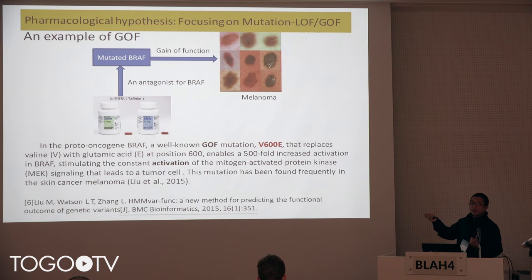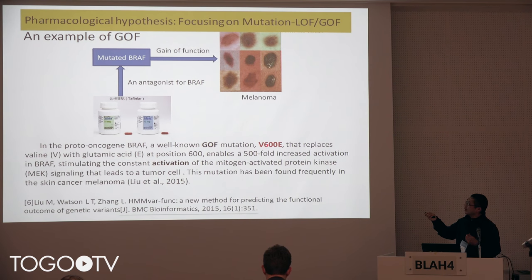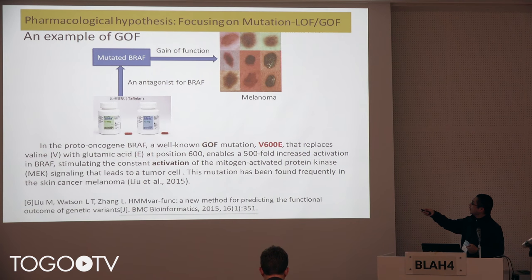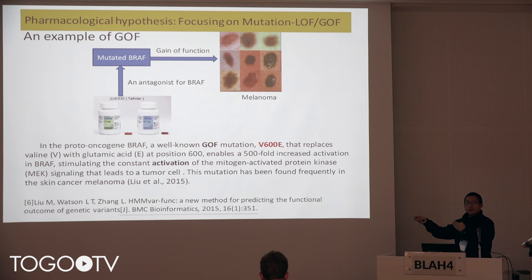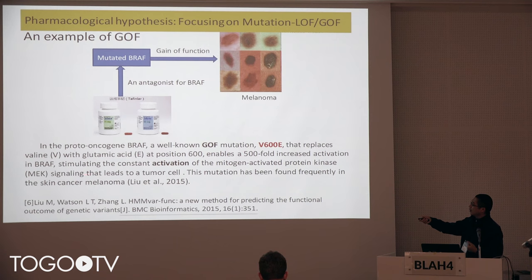There is a GOF mutation in BRAF: at position 600 in the amino acid sequence, V becomes E. Just because of this V600E mutation in BRAF, it activates a lot of subsequent molecular processes, which finally leads to tumor cell formation.